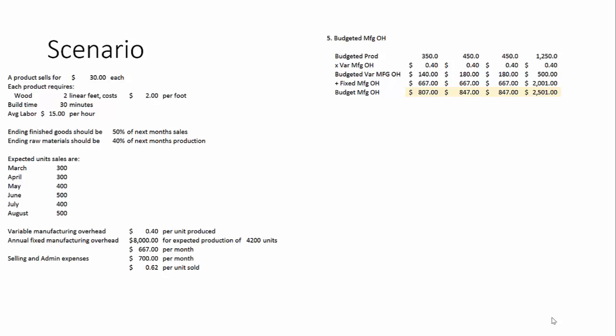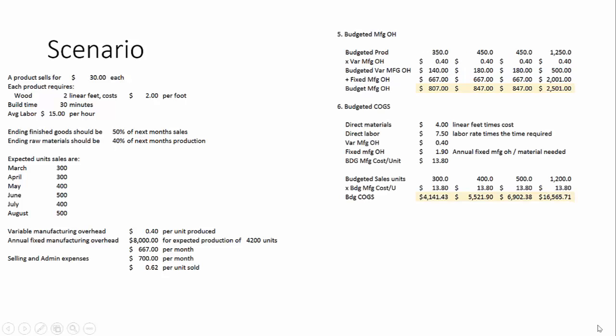Now we look at budgeted manufacturing overhead, using the same budgeted production units calculated in part two. We multiply those by the variable manufacturing overhead rate of $0.40 per unit, so the budgeted variable manufacturing overhead is $140 in April. The fixed overhead is $667 per month — that's the same across all levels of production. So the budgeted total manufacturing overhead for April is $140 plus $667, which gives you $807. The yellow highlighted values are the ones you want to write down.